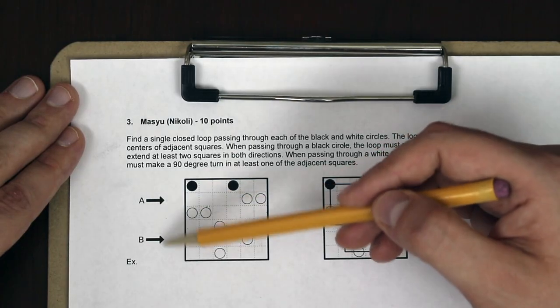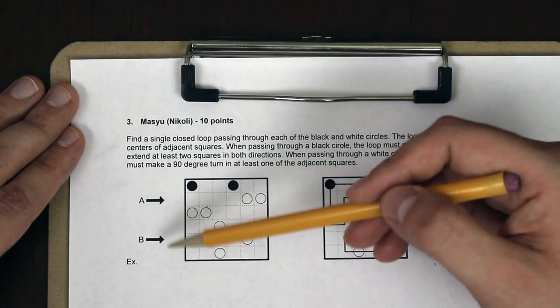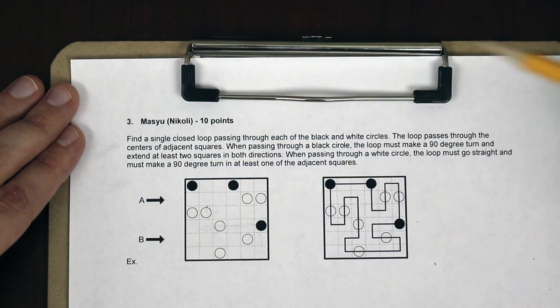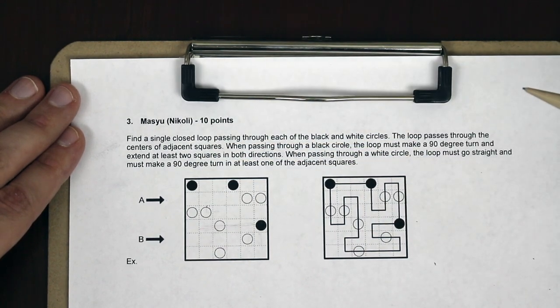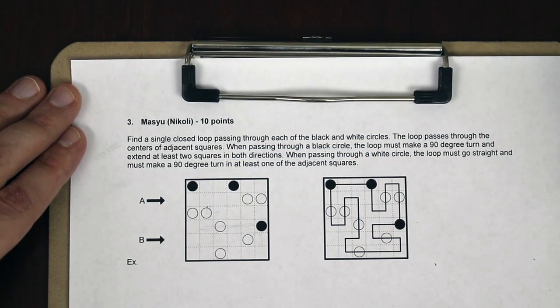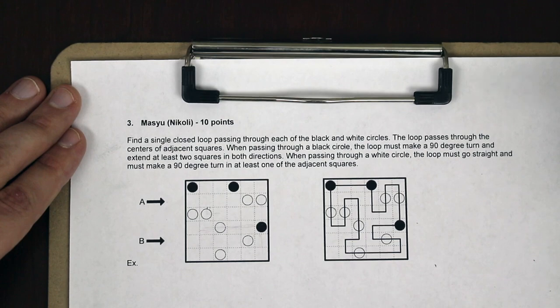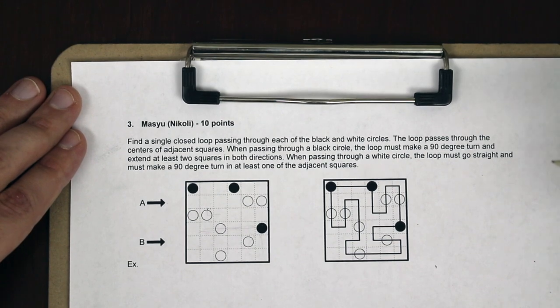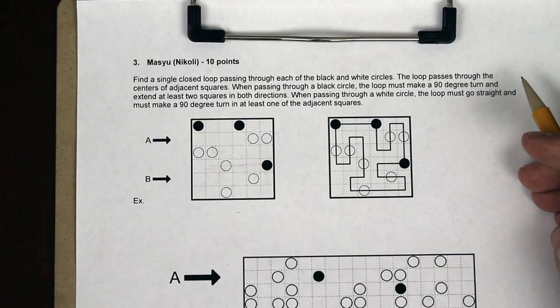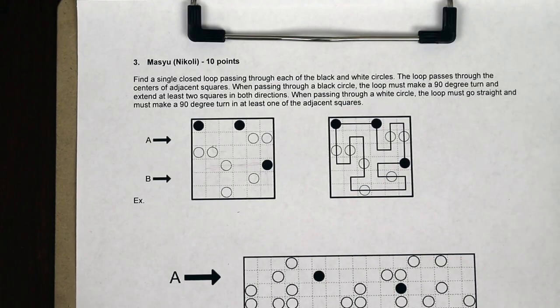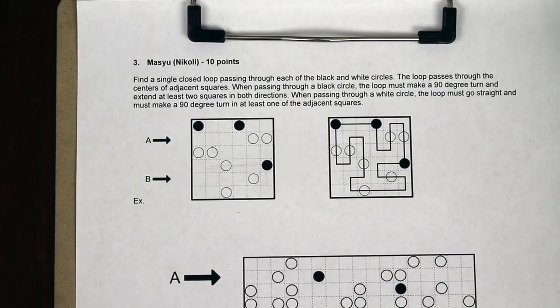It's worth noting that the letters here are not used in the solving of the puzzle — they're just used for entering the answer. There are similar letters on the large puzzle, and those also are not used. With the rules explained, let's take a look at the main puzzle.